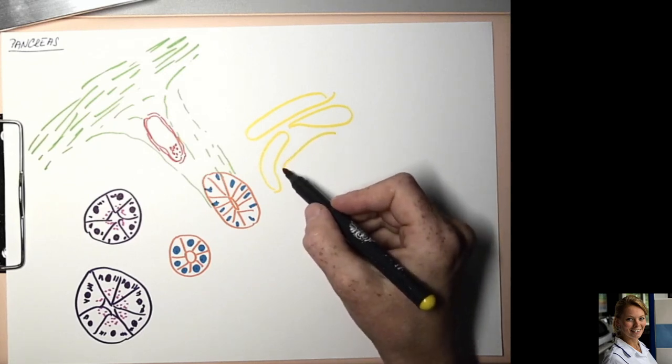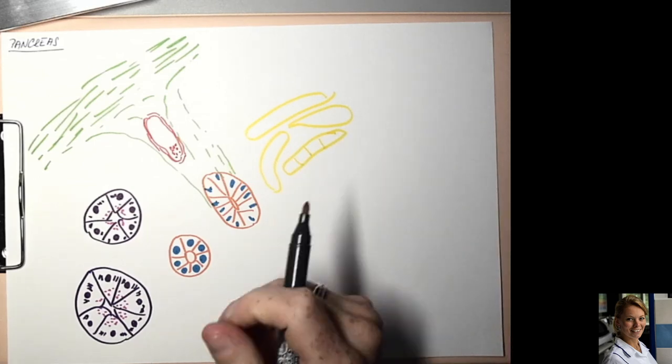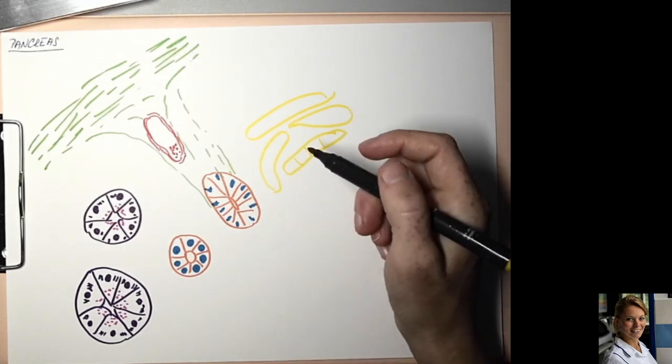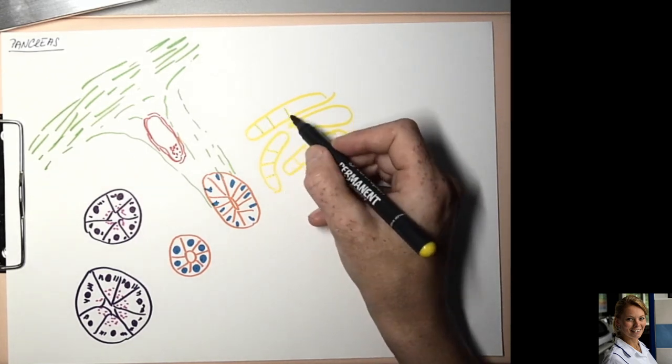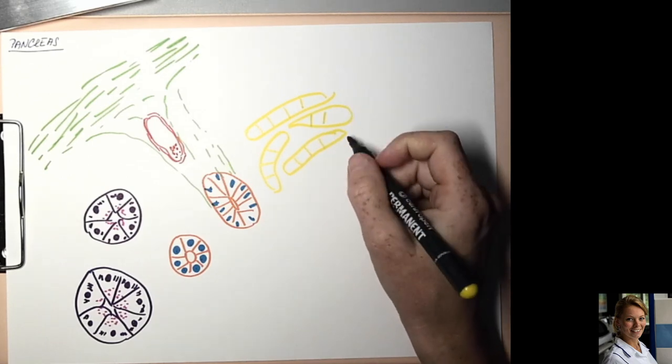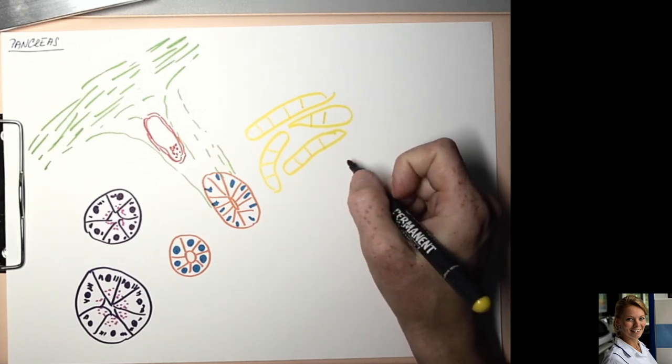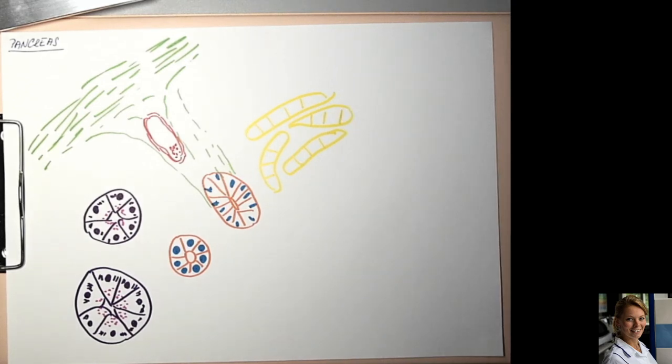Beta cells producing insulin. Insulin decreases the blood glucose level. Next cells are delta cells producing somatostatin, which decreases the contractibility of smooth muscle cells of digestive tract and decreases the rate of digestion.